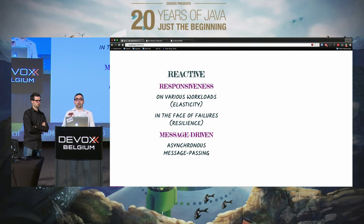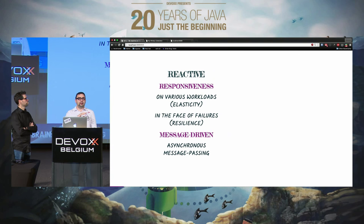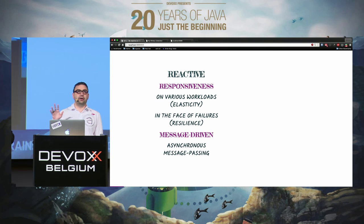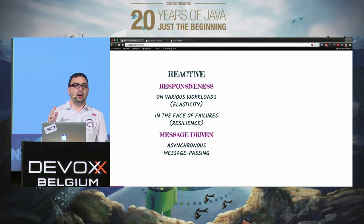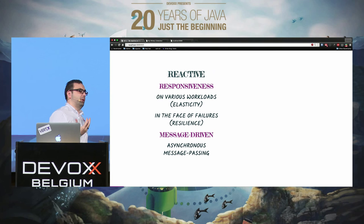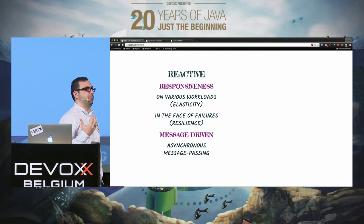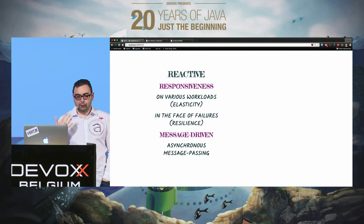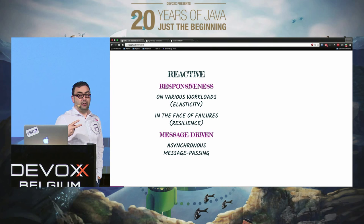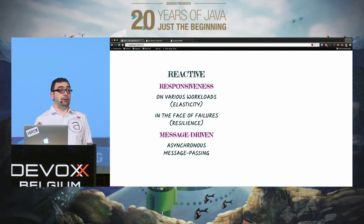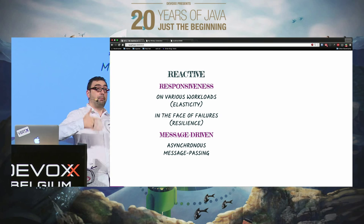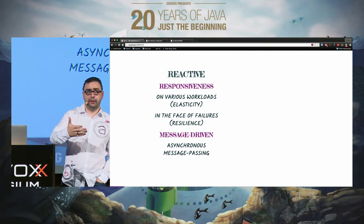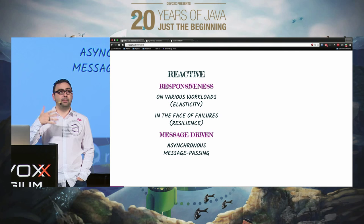So, reactive. A couple of years ago, some people met and decided to write a manifesto about what reactive means. There is no real consensus today, but if you read the manifesto, there are two big pillars. One is responsiveness — your system must always reply to requests in an acceptable time.